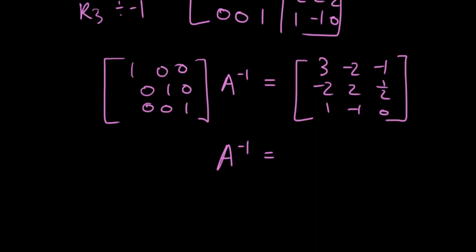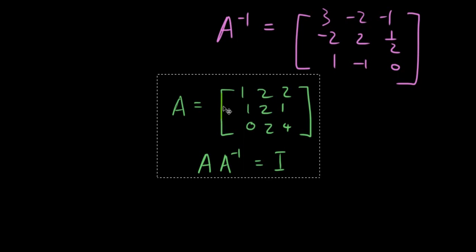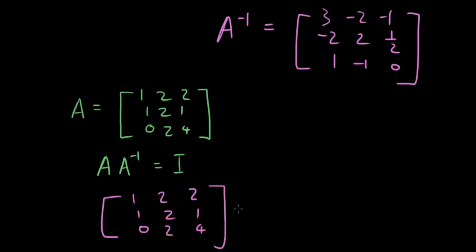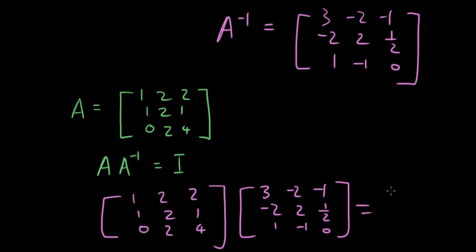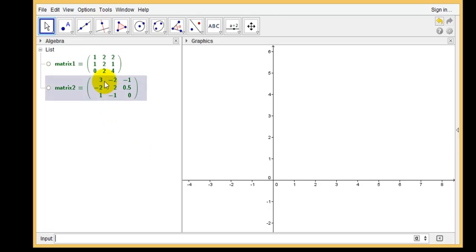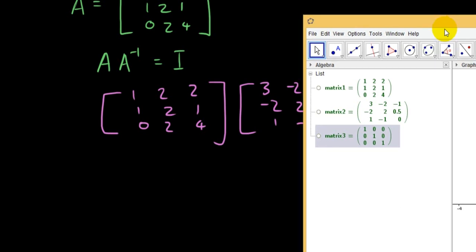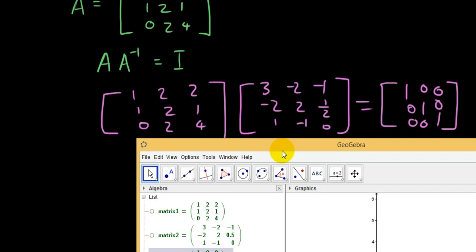If you don't believe me, I'm going to do a quick test in GeoGebra. This is our original matrix and this is our inverse — so theoretically, if I enter 1, 2, 2; 1, 2, 1; 0, 2, 4 and multiply by the inverse, I should get the identity matrix. As you can see in GeoGebra, I've entered these two matrices, and if I type in matrix 1 times matrix 2, I get matrix 3, which is the identity matrix. So it has passed the test. Thanks for watching guys, see you next time.